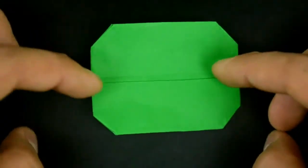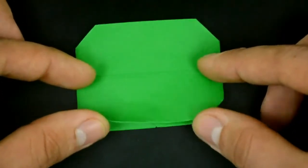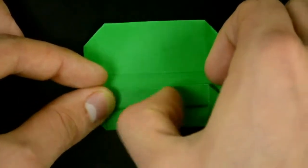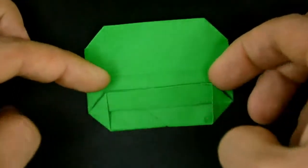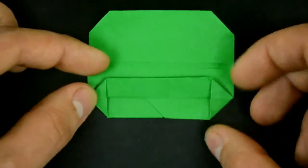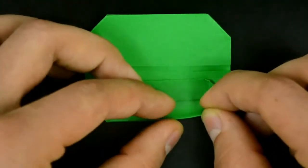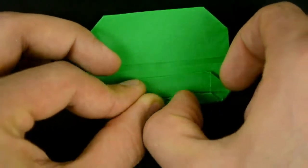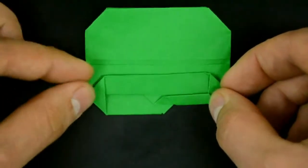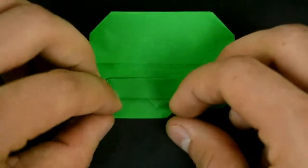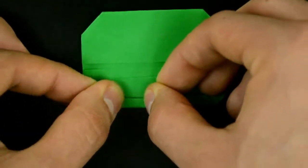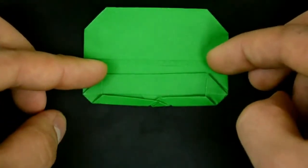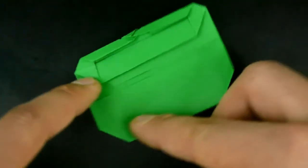Then fold the bottom edge up. Fold the other layers until the last fold. This one, now the other. Rotate the paper and repeat the same on the other side.